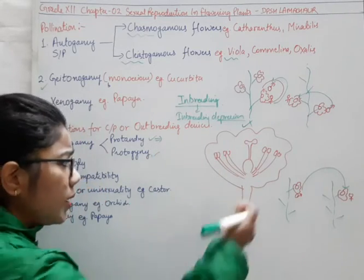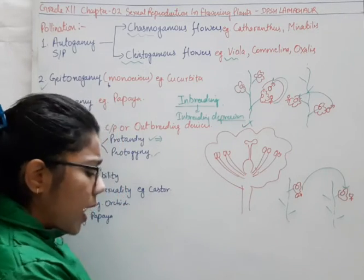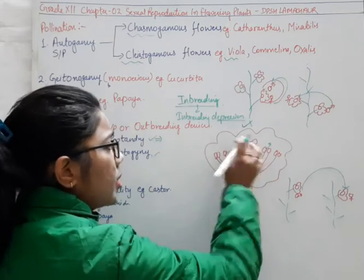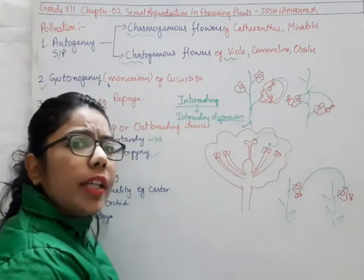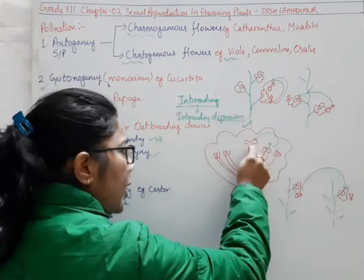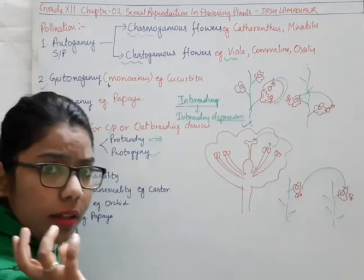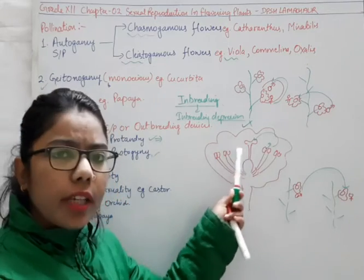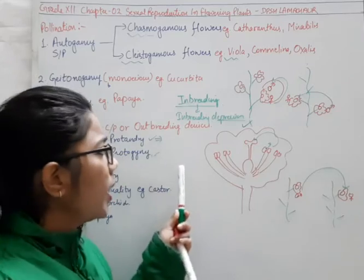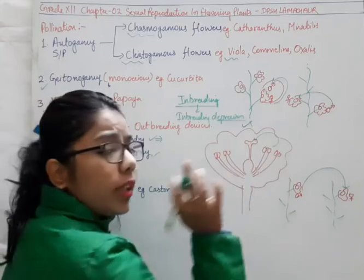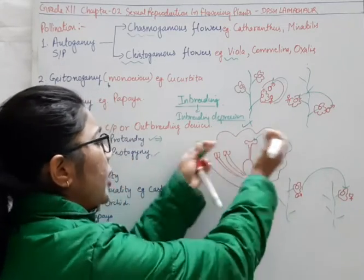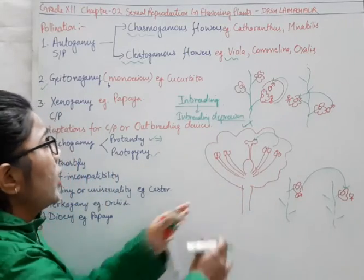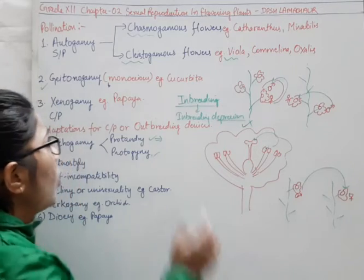For example, in the same flower where both reproductive structures are present, anthers are ready for dehiscence but at the same time the stigma is not receptive. So if pollen comes to the stigma, it will fail to germinate. This self-pollination would fail. This happens in the case of flowers where both structures are present on the same one. Reversely, if the female is ready but the pollen is not matured for dispersal, it will also prevent self-pollination — this is the protogyny condition.